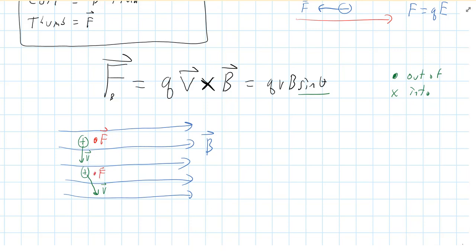Now, what if that little positive guy is going parallel to the field? Well, then there's going to be no force acting on him. So he will continue in a straight line. There's no force acting on him at all because there's no part of the velocity that's perpendicular to the magnetic field.